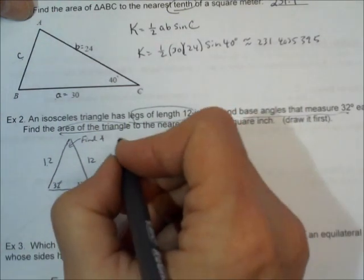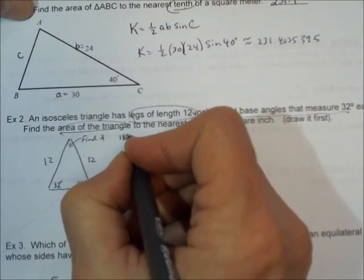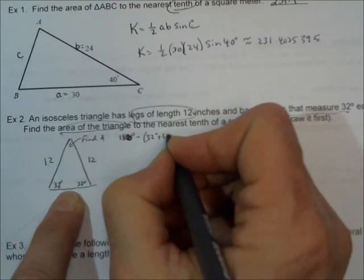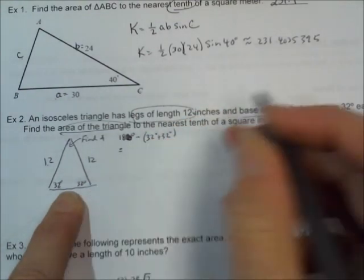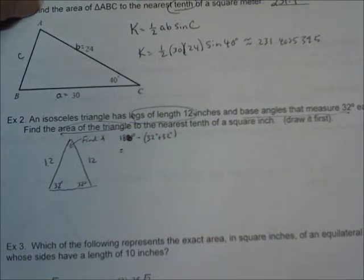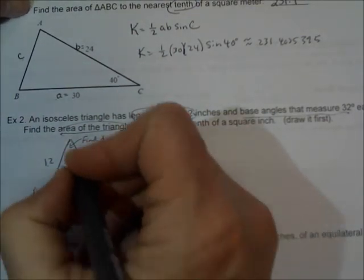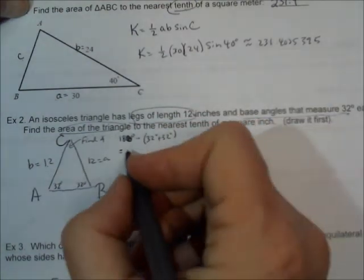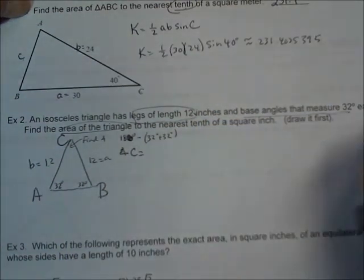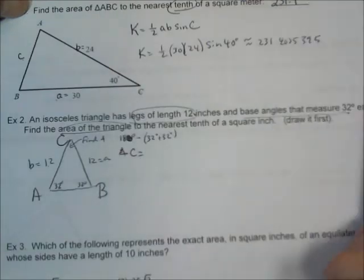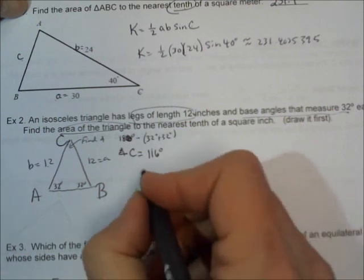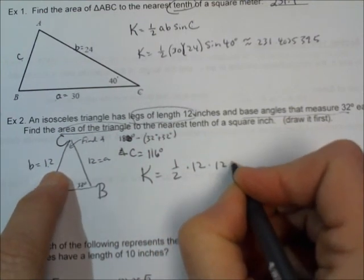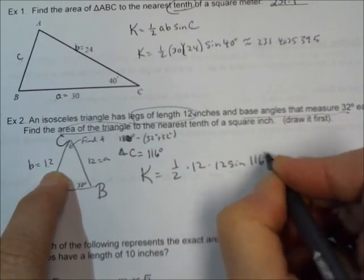Remember, it's just 180 degrees minus those two added up — 32 plus 32, which is 64. So this angle — let's call it A, B, C — so this is little b, this is little a, and this is angle C up here. So angle C is equal to 180 minus 64, which is 116 degrees. So the area is equal to one-half times 12 times 12 times the sine of the angle in the middle of them, 116.